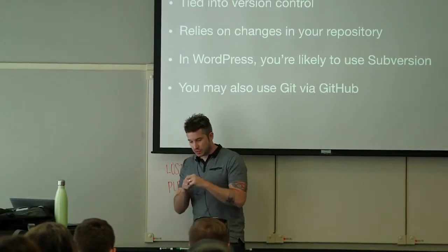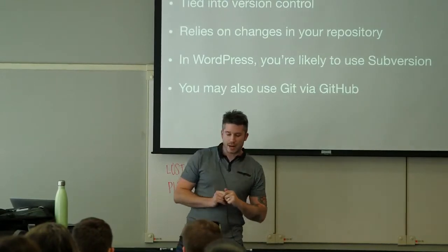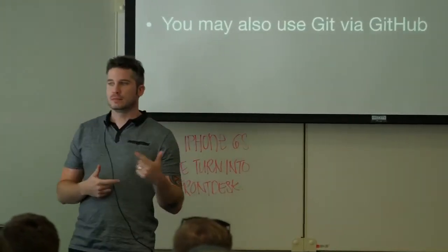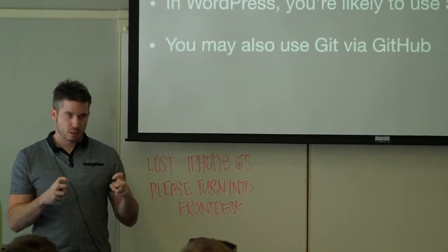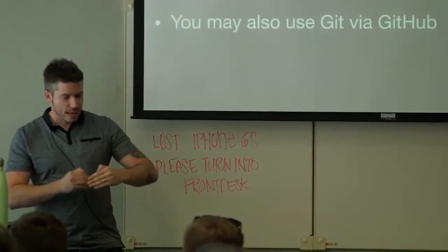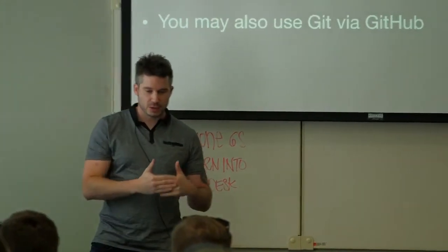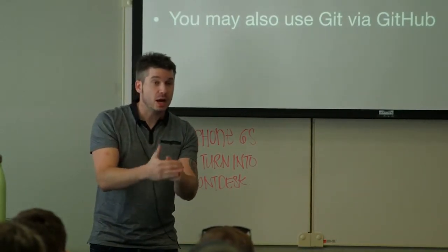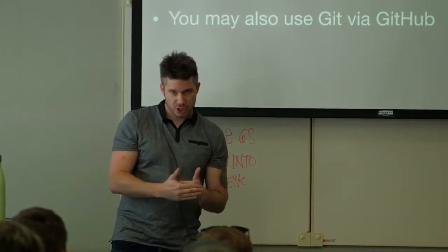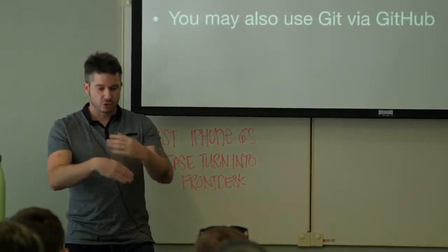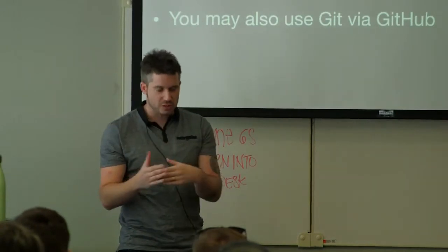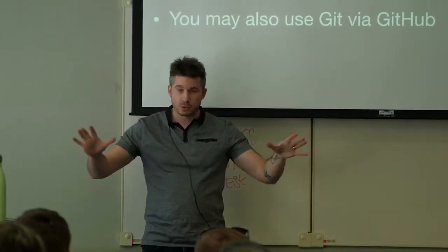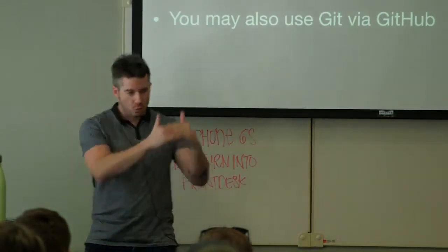There's one extra step Git does that Subversion doesn't: you can do a commit before you do a push. So you can have what's called a changeset. Let's say you change five files — you say I have implemented this feature and it has touched these five files, I'm going to commit these, but they haven't actually gone out to a remote machine yet. You continue working, create a few more commits, and then you push, sending it out to the remote machine.